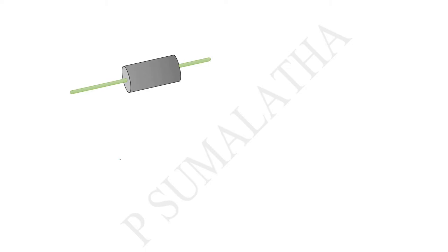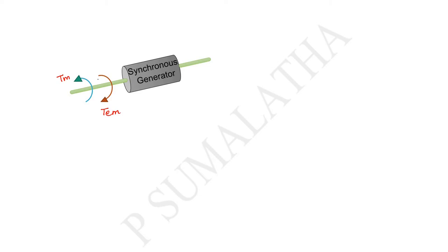Let us consider the synchronous generator rotor, which is mounted on the shaft. Whatever forces are applied on the shaft cause the rotor to rotate, and the twisting or turning force is called torque. Two torques act on the synchronous generator: the mechanical torque (shaft torque) and the electromagnetic torque. These two torques act in opposite directions.